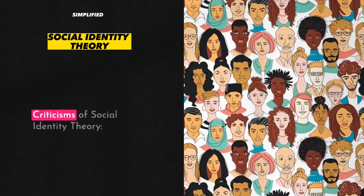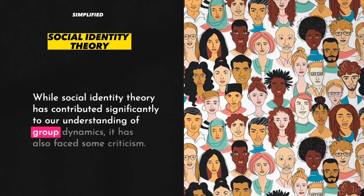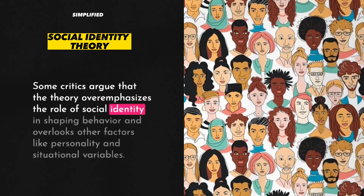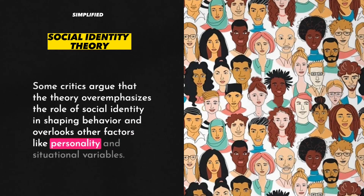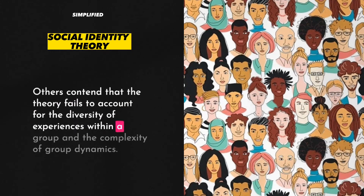7. Criticisms of Social Identity Theory. While Social Identity Theory has contributed significantly to our understanding of group dynamics, it has also faced some criticism. Some critics argue that the theory overemphasizes the role of social identity in shaping behavior and overlooks other factors like personality and situational variables. Others contend that the theory fails to account for the diversity of experiences within a group and the complexity of group dynamics.